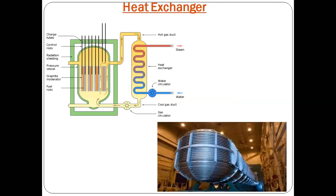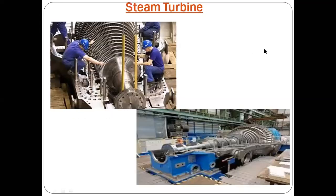This second diagram shows the heat exchanger, which is connected to the nuclear reactor. You can see charge tubes, a control rod, radiation shielding, pressure valves, graphite rods, a moderator, and fuel rods. The fuel rods are the radioactive element uranium. The moderator rods slow down the nuclear fission energy. There is also a hot gas duct and steam heat exchanger. This pictorial representation shows the actual heat exchanger used in a nuclear power plant.